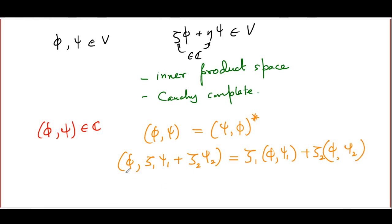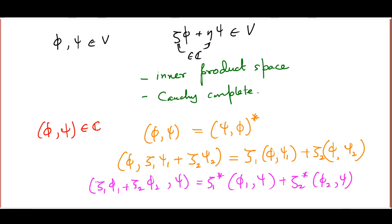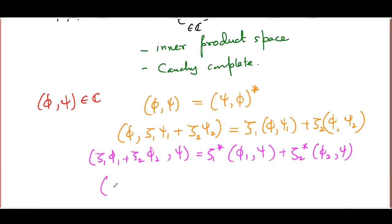Well, an immediate consequence is that it is going to be antilinear in the first factor. That is, if I were to replace phi by zeta 1 phi 1 plus zeta 2 phi 2 and take its inner product with psi, we are going to get zeta 1's conjugate times phi 1 comma psi plus zeta 2's conjugate times phi 2 comma psi. This is not a separate property. You can immediately prove this from the first two.